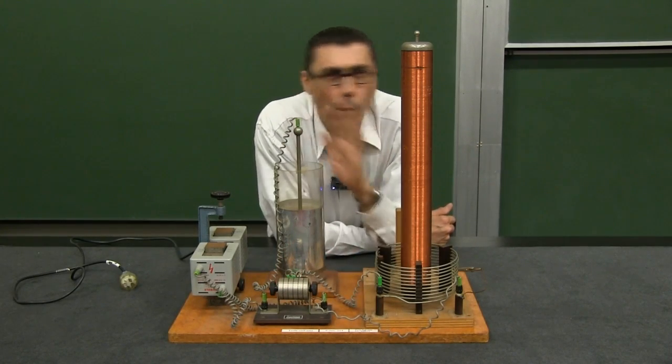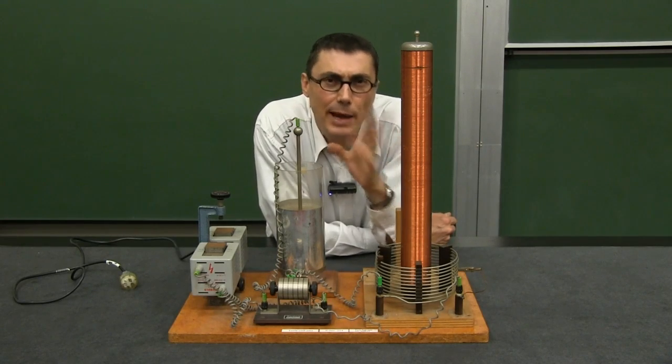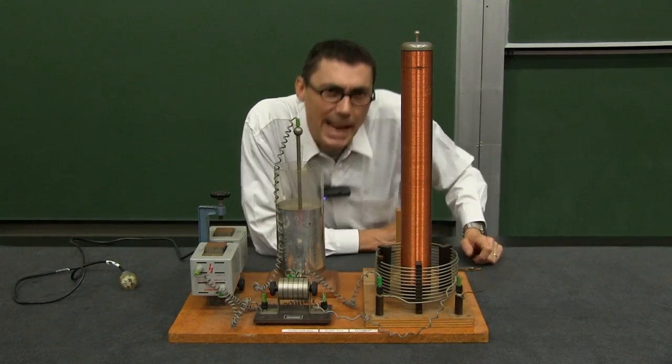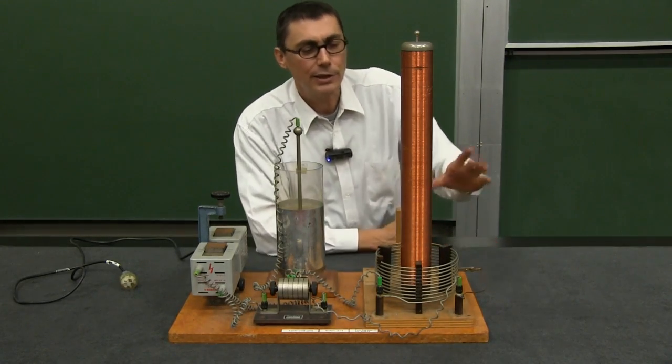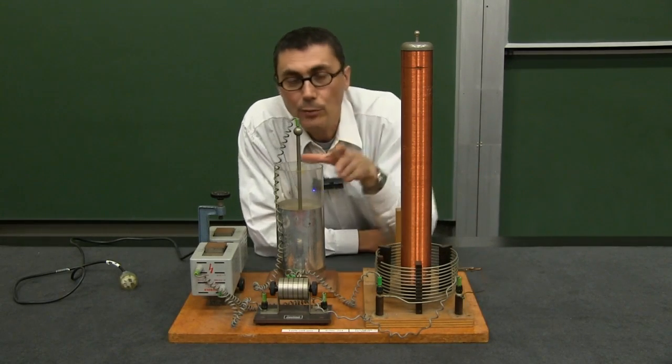But we don't want all those frequencies. We want to concentrate on one frequency, so we need a way to filter out all the other frequencies. And the way we do that is we have a thing called a tank circuit. A tank circuit is just a coil or an inductor, if you like, connected in parallel with a capacitor.